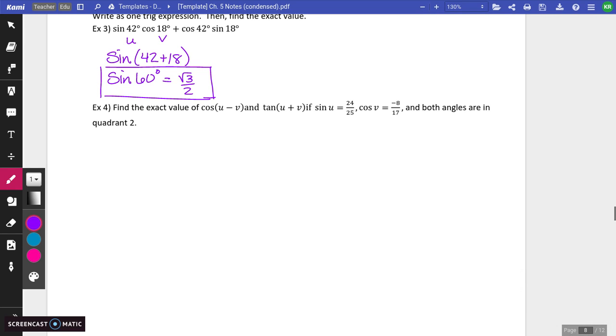Okay, so number four is the last one we have to do in this lesson. So we're going to find the exact value of cosine of u minus v, tangent of u plus v, using this information. Okay, we're also told that both of these angles are in the second quadrant.